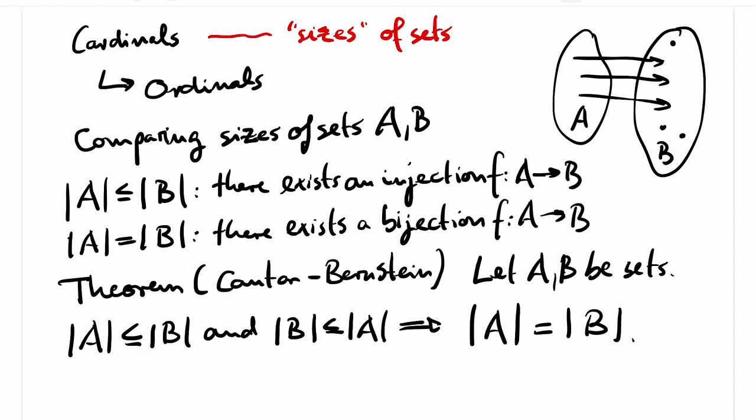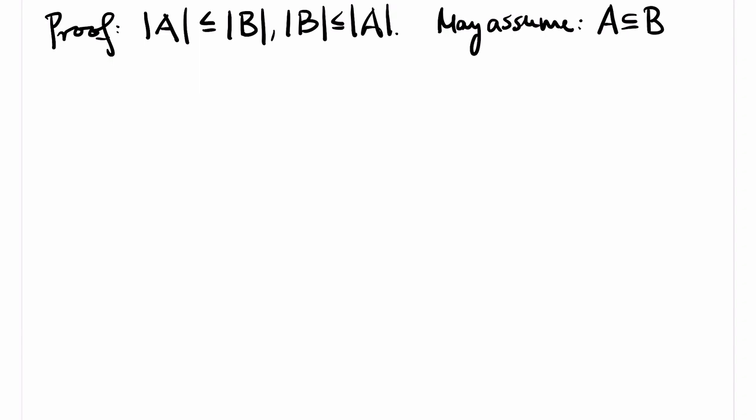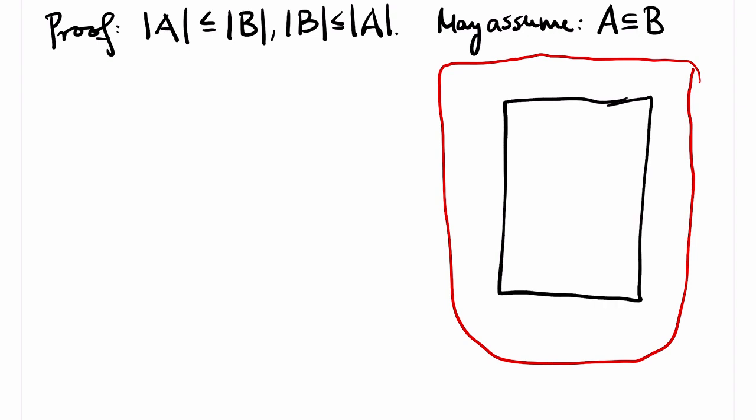I will present a short proof of it. Let A and B be two sets with an injection from A to B and an injection from B to A. We may rename the elements of A along the injection to B, and therefore we may suppose, without loss of generality, that A is a subset of B. So the picture is as on the right. Let G be the injection from B to A. We have to construct a bijection between A and B.